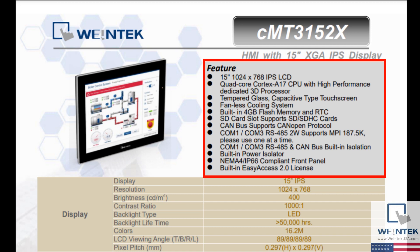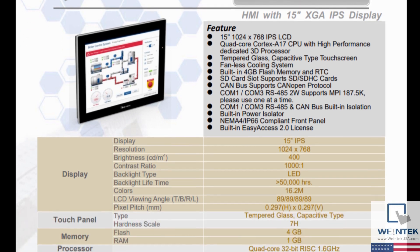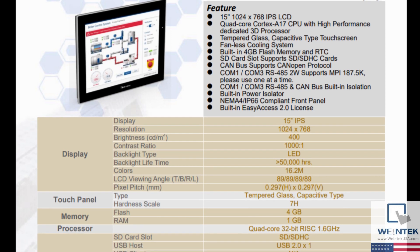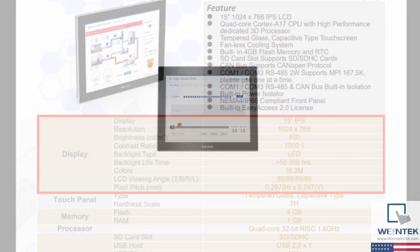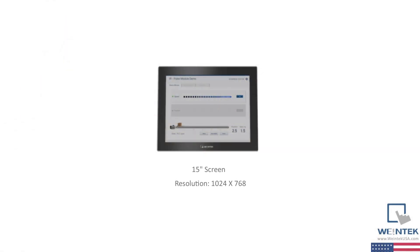This list may include screen size, processor speed, memory, and available communication ports. Next is the Display section. First it will show screen size and resolution. The 3152X offers a 15-inch LED screen with a 1024x768 resolution.